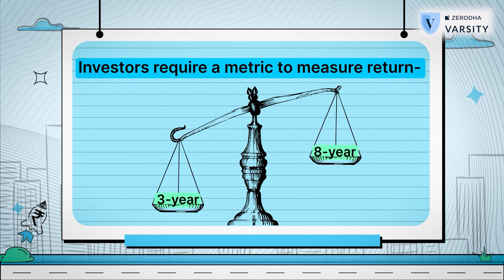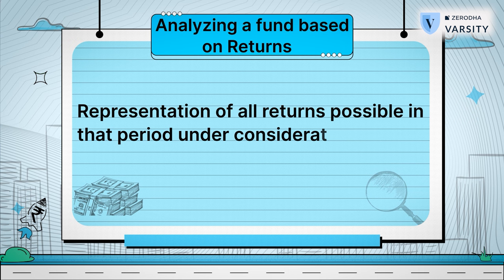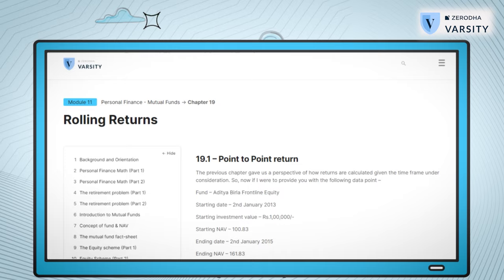I know this may sound a little confusing, but think about it this way. In the last 8 years, I can have multiple starting and ending dates which can give me a 3-year window. So when you are analyzing a fund based on returns over a period, then you need a true representation of all returns possible in that period under consideration. The metric that gives you all possible returns for a selected time period is called the rolling returns.